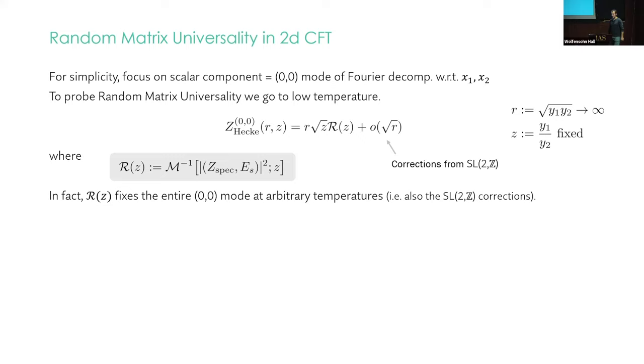Okay, so with this on hand, we want to ask about random matrix universality. So for simplicity, let's focus on the scalar mode under the Fourier decomposition with respect to the real parts of tau one and tau two. And we will take a low temperature limit, which is where we expect this behavior to hold. Remember, Y is Im tau. So we're going to take Y1 and Y2 to infinity, beta 1 and beta 2 to infinity in a fixed ratio. You can show that this takes the following form. The leading term is R times root Z times this capital R of Z, where that in terms of this overlap is just the inverse Mellin transform of the square of this overlap of Z_spec with the Eisenstein series.